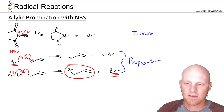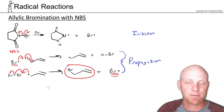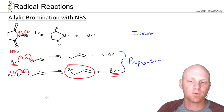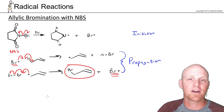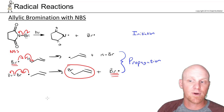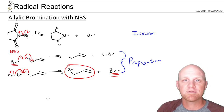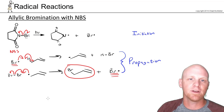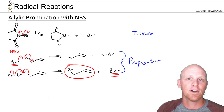I'm not going to draw out all the termination steps here. But if any two radicals meet and form something that's not a radical, that's a termination step — two bromine radicals, two carbon radicals, a carbon radical and a bromine radical, or one of the NBS radicals hitting something. Any two radicals meeting and forming a non-radical product is a termination step.